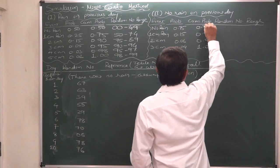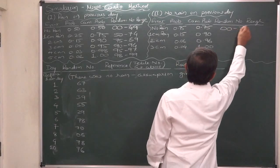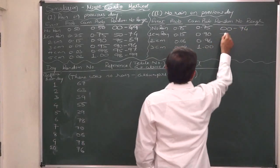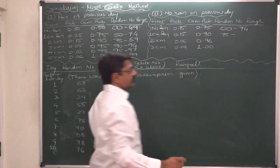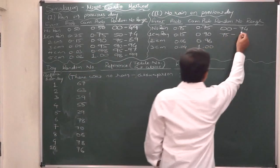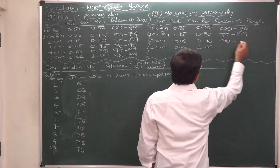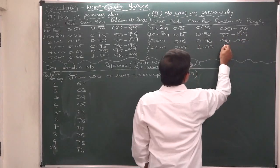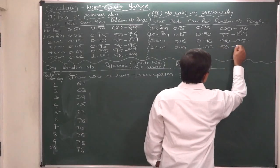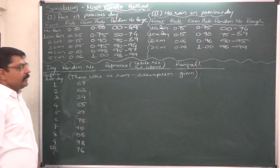For no rain on previous day, random number ranges are: no rain — 00 to 74; 1 centimeter — 75 to 89; 2 centimeters — 90 to 95; 3 centimeters — 96 to 99.